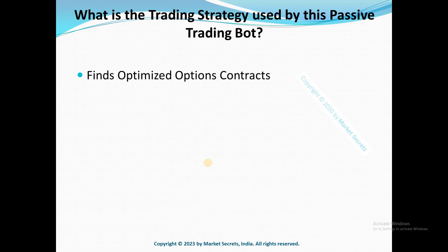Our bot uses a simple option trading strategy. Every morning our bot will analyze the market conditions and based on the market conditions and various variables, it identifies two optimized option contracts — one option CE and one option PE — and sells both contracts at the same time.